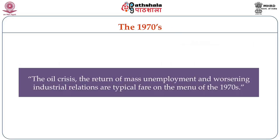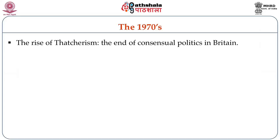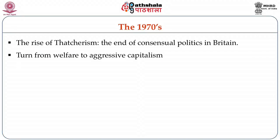The 1970s can be termed as a period when oil crisis, the return of mass unemployment and worsening industrial relationships were typical. The rise of Thatcherism signaled the end of consensual politics in Britain. Her stern manner of functioning and holding all power in her hands marked a turn in British political life. The attention of government was shifting from welfare of the people to aggressive capitalism — a shift from welfare to consumerism was a major feature witnessed during Thatcher's rule.